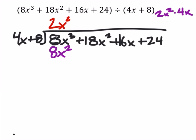Now, since when I multiply those two, I get a positive 8x cubed, that's what I'm going to take away from the 8x cubed. That's a bad start for me, right?